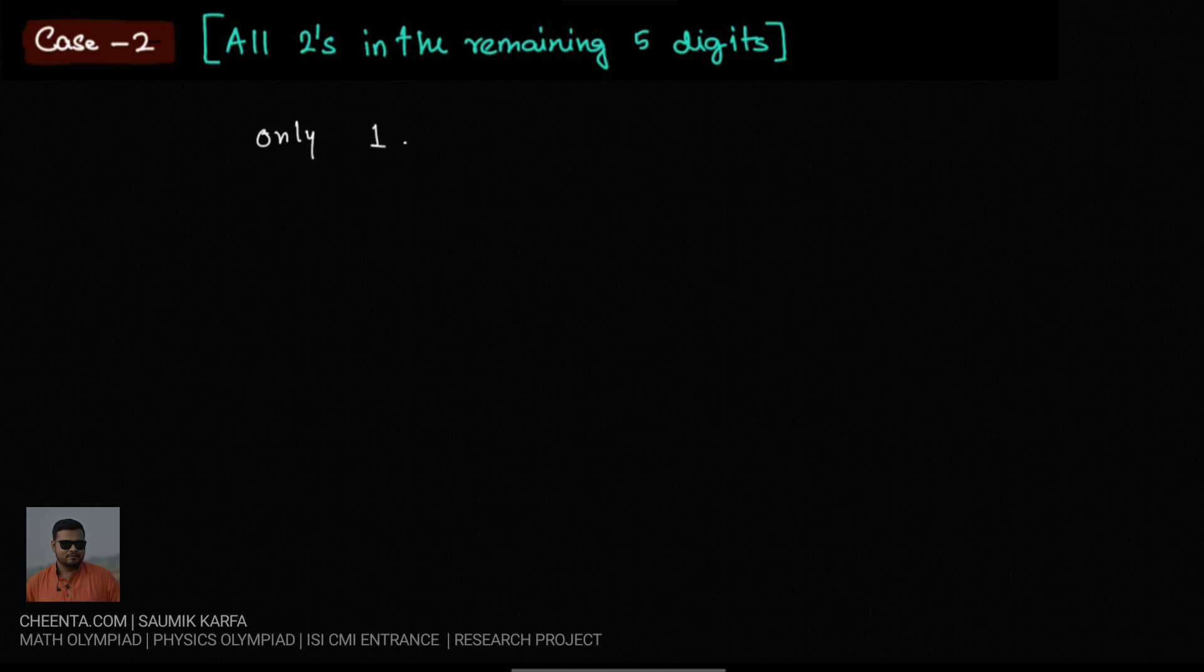Then the total of such numbers we can get is 30 plus 30 plus 10 plus 10 plus 1, which makes it 81, and that is our final answer.